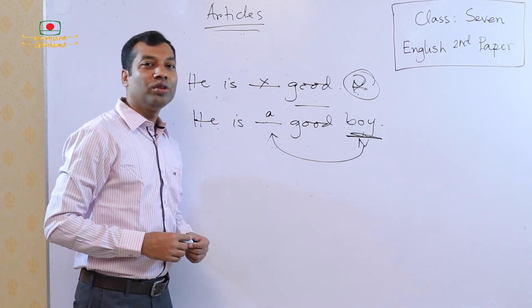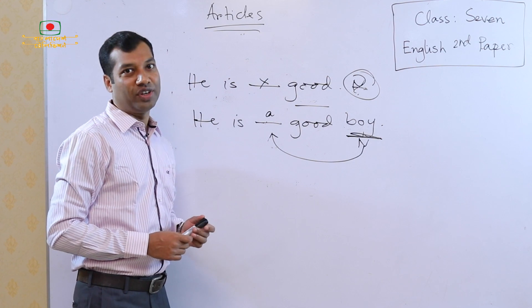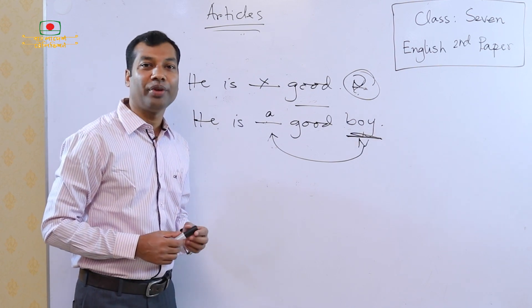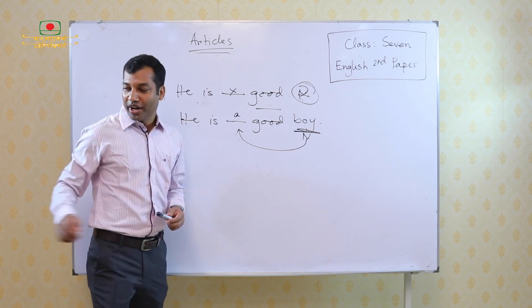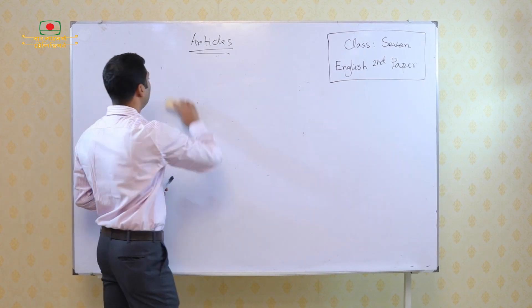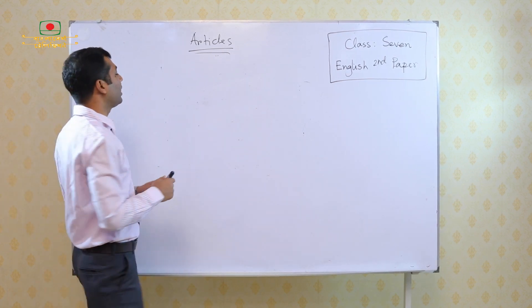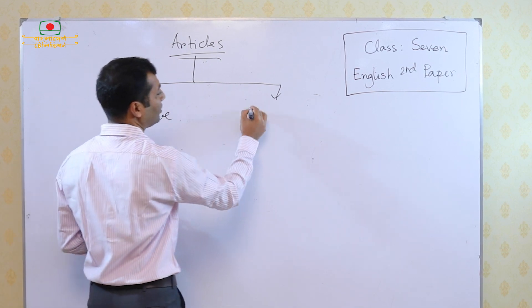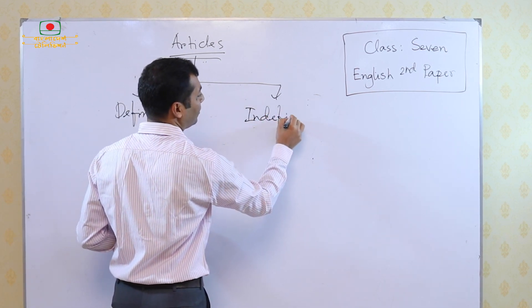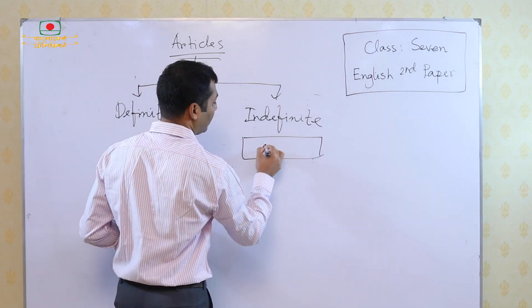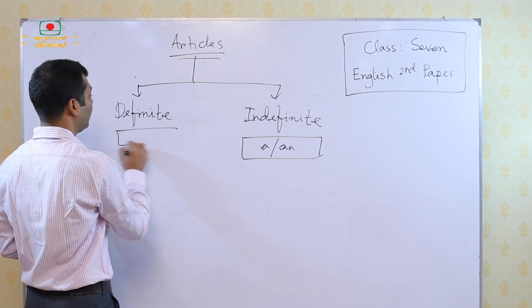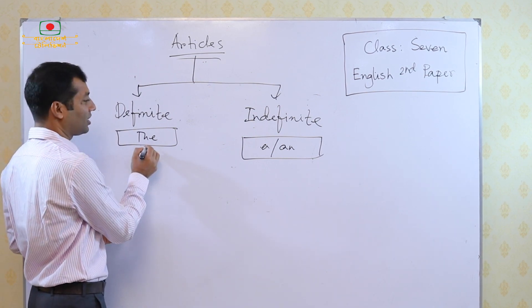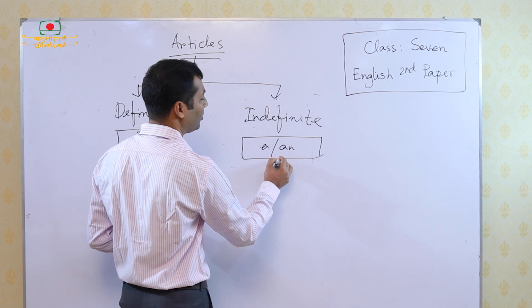Now we have to know the use of definite article and indefinite article. In this class, I will talk about the use of indefinite articles — that means the use of A and AN. Indefinite articles are A and AN, and the definite article is only one: THE. We will talk about the use of THE in my next class. But now, this class, I will talk about the use of A and AN.